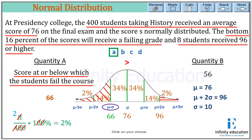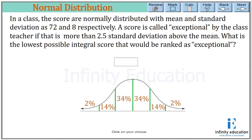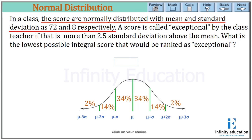Now let's do one more example. In a class, scores are normally distributed with mean 72 and standard deviation 8. A score is called exceptional by the class teacher if it is more than 2.5 standard deviations above the mean. We draw the bell curve with mu equals 72 and sigma equals 8.